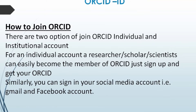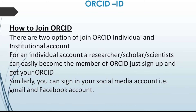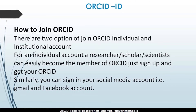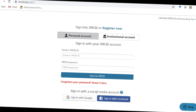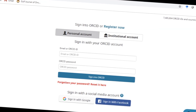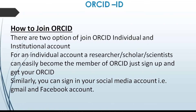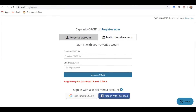To join ORCID, there are two options: individual account and institutional account. For an individual account, a researcher, scholar, or scientist can easily become a member of ORCID by simply signing up to get their ORCID ID. You can also sign in using your social media accounts, such as Gmail or Facebook. For an institutional account, you log in with your institutional ID and password.